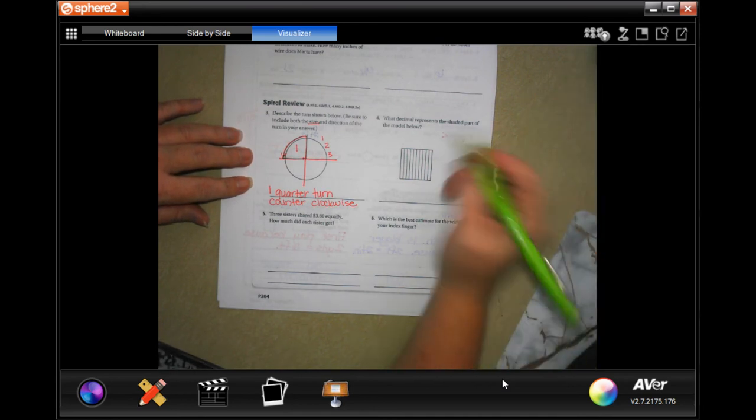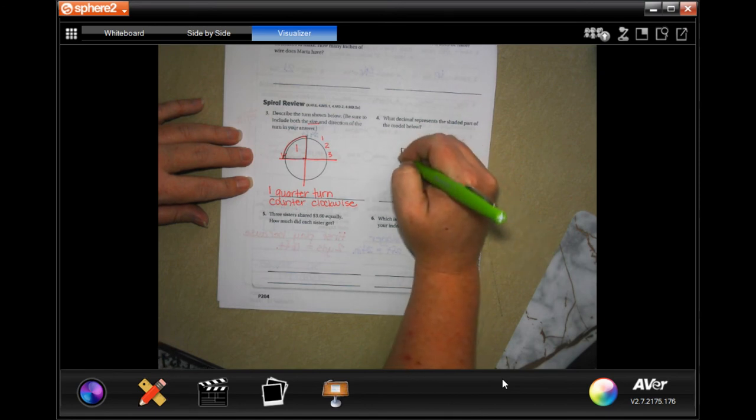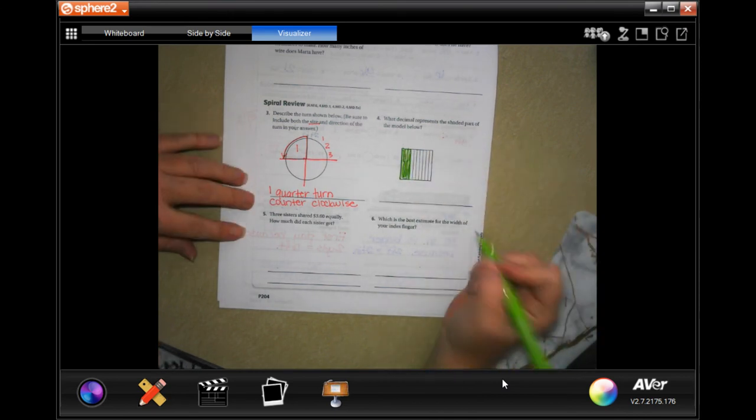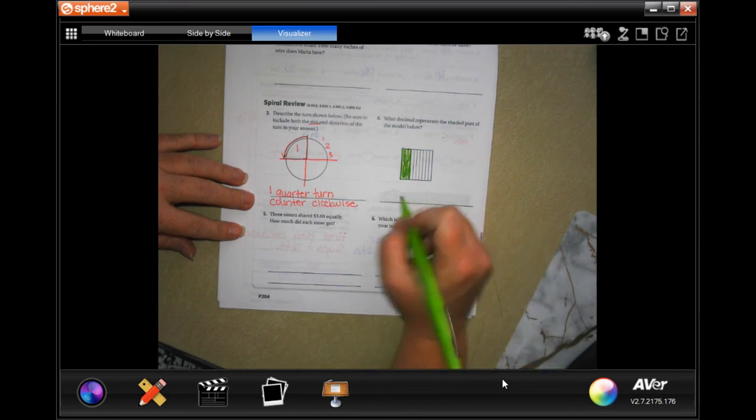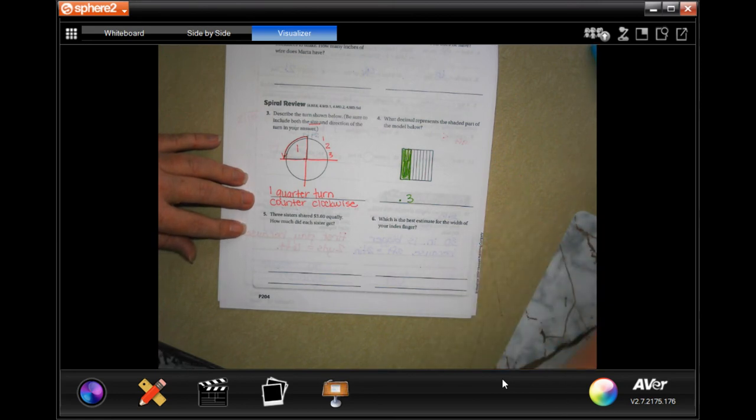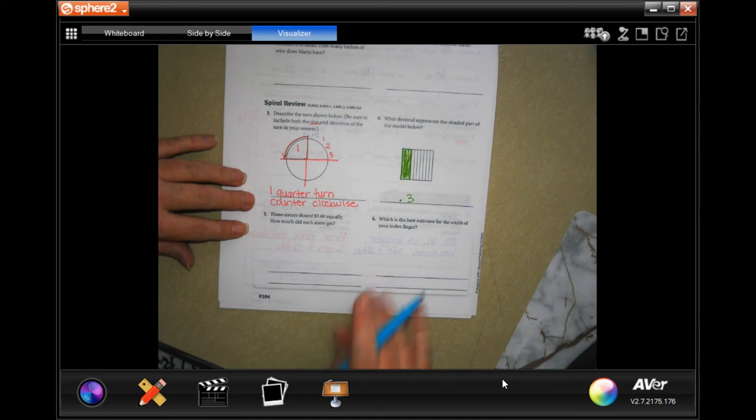On this one, I know it's really hard for you all to see. But these 3 are the ones that are colored in. So the decimal would be 3 tenths. Done. There's 10 here. 3 of them are colored in.